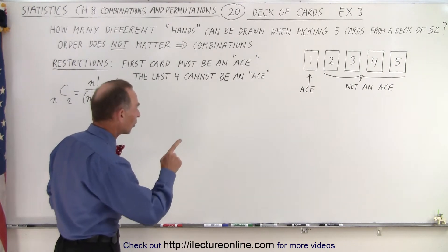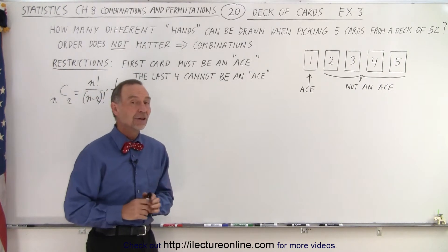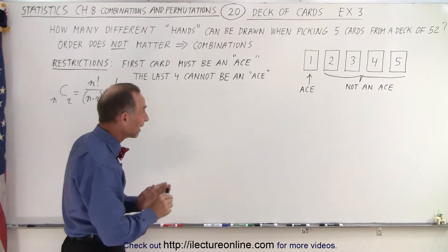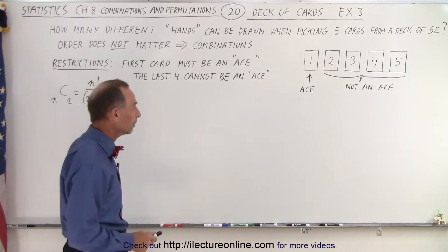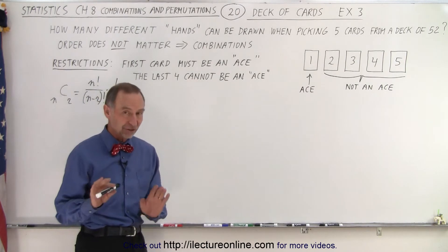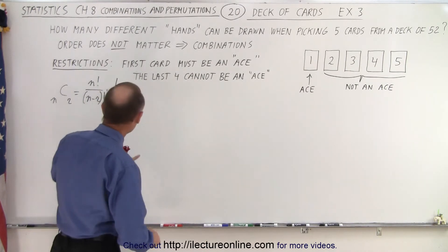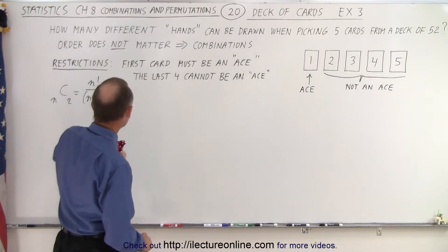First of all, the first card must still be an ace but the second restriction now is that the next four cards are not allowed to be an ace. They need to be another card. So how many different combinations, and yes I said combinations because order does not matter.